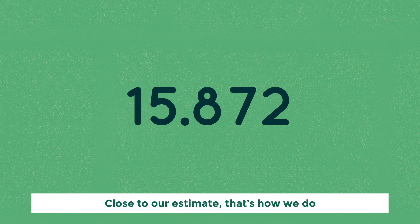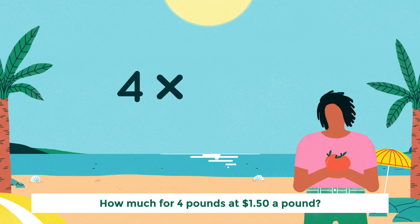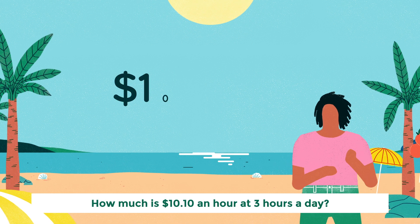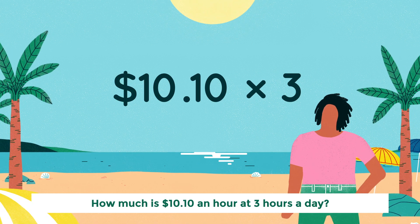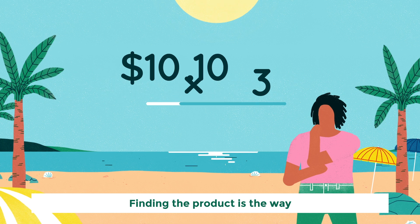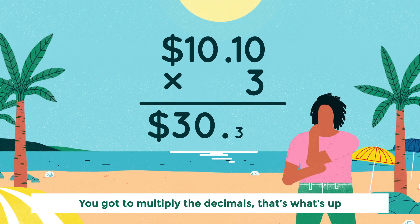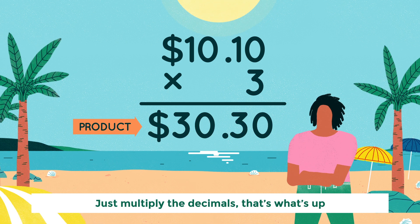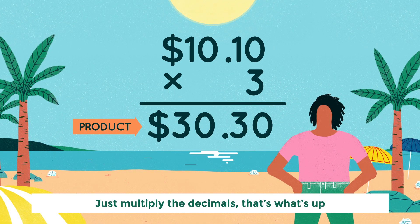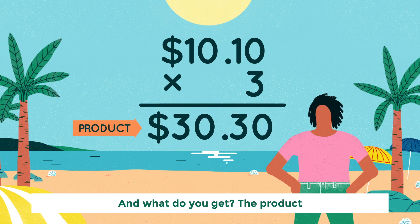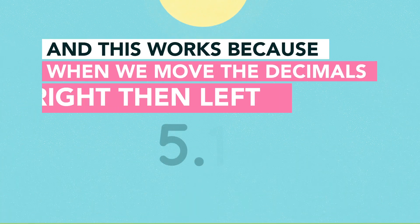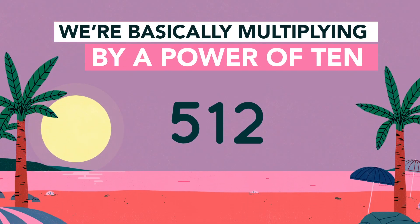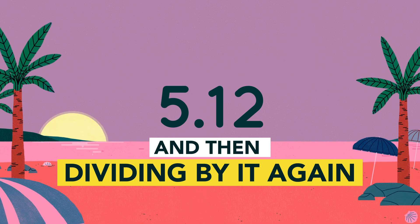Close to our estimate — that's how we do. How much for four pounds at $1.50 a pound? Multiply with decimals, yeah that's how. How much is $10 an hour at three hours a day? Finding the product is the way. You gotta multiply the decimals, that's what's up. And what do you get? The product. And this works because when we move the decimals right then left, we're basically multiplying by a power of 10 and then dividing by it again.